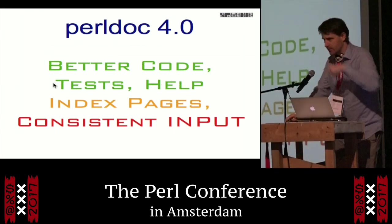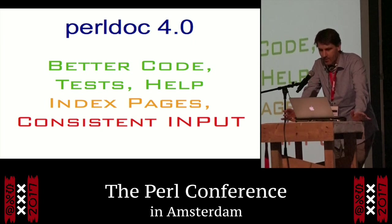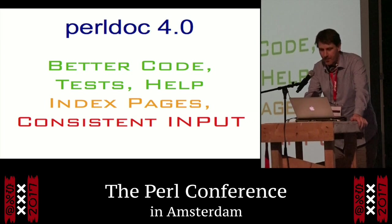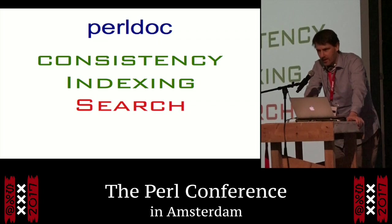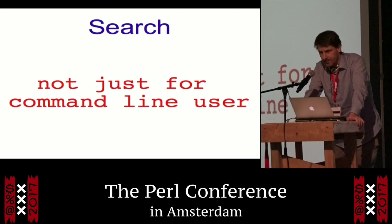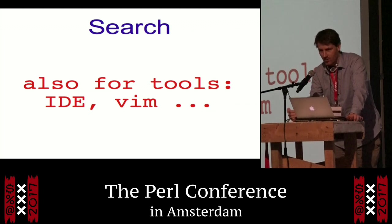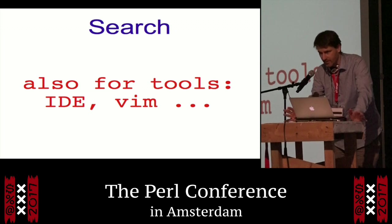This is part two from yesterday. I still have a pronoun. I want to ask you some questions which might become Perl 4.0. Yesterday we agreed we want better code, tests, better help, index pages, and consistent input. What I couldn't do in five minutes was talk about search and add-ons. Search is not just for the command-line user — I also want PerlDoc to be the central tool to fuel IDEs and other tools, to get out particular information on mouseover or similar actions. So we have a central station with good communication, not fragmented into lots of tools.